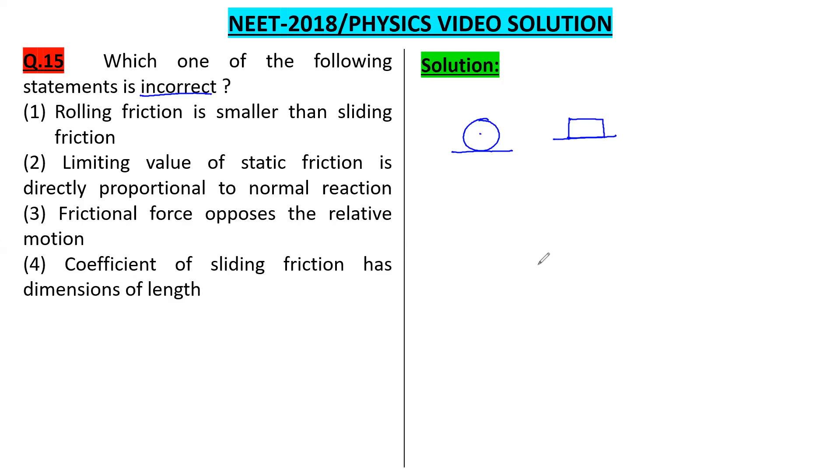Limiting value of friction is directly proportional to the normal reaction. You know that the maximum value of static friction, F_s max, which is called the limiting friction, is μ times N. So it is directly proportional to the normal reaction. This statement is correct.